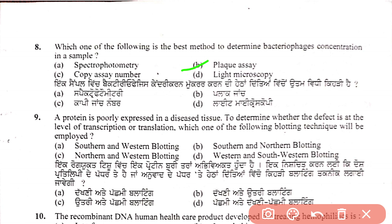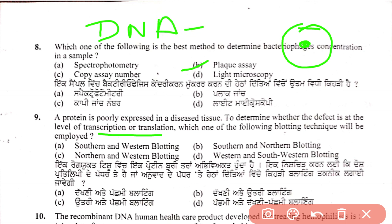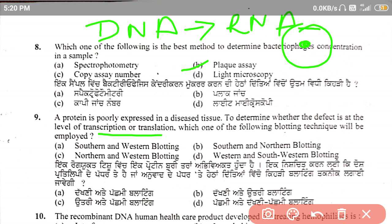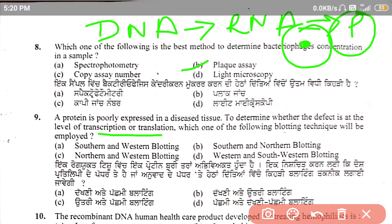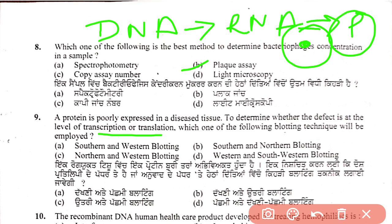A gene is poorly expressed in a diseased tissue. To determine whether the defect is at the level of transcription or translation, which blotting technique will be employed? Transcription means DNA to RNA (first step), and translation means RNA to protein (second step). We use blotting techniques to study the defect.